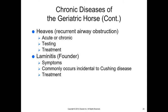Laminitis, or founder, is very common and can occur at any age, with some horses genetically predisposed. Founder involves inflammation in the hoof. Many things can trigger it — overeating, injury, stress, colic, or Cushing's disease — because anything causing systemic inflammation or increased white cells can lead to founder. Treatment includes limiting access to high-sugar and high-starch diets, anti-inflammatory medications, and corrective shoeing.